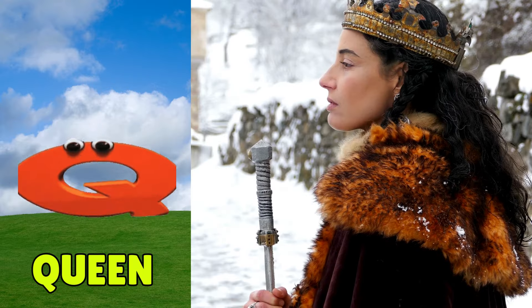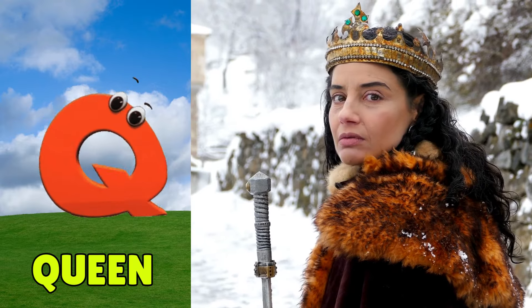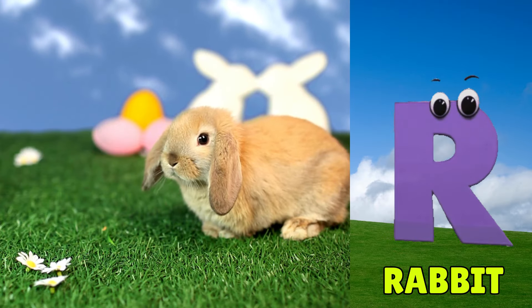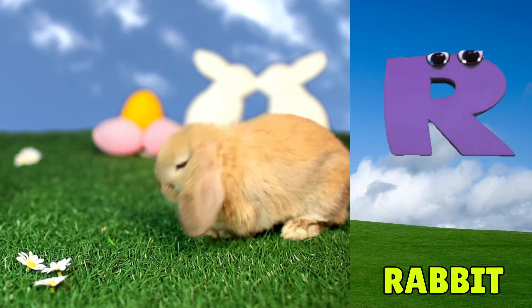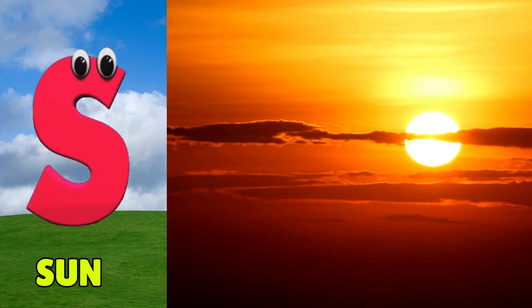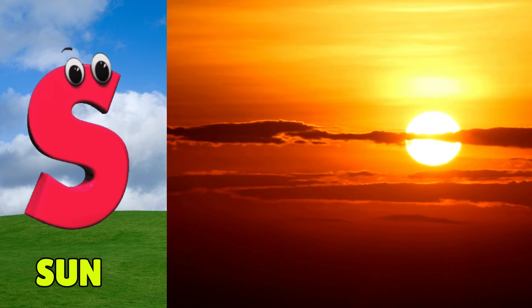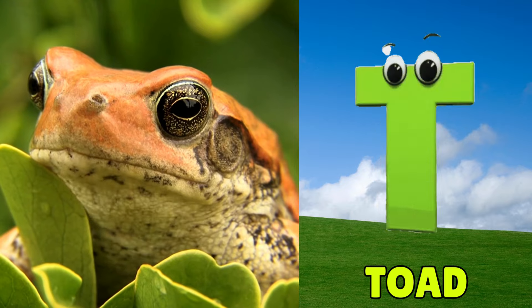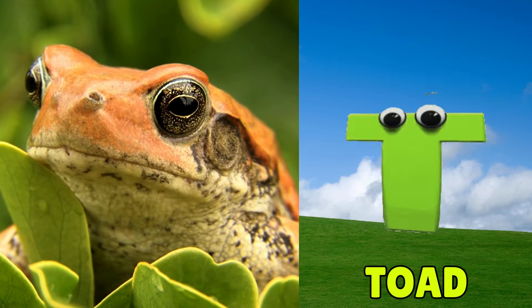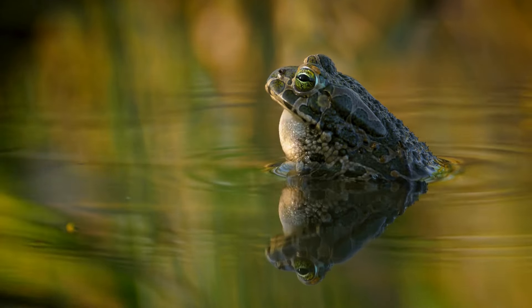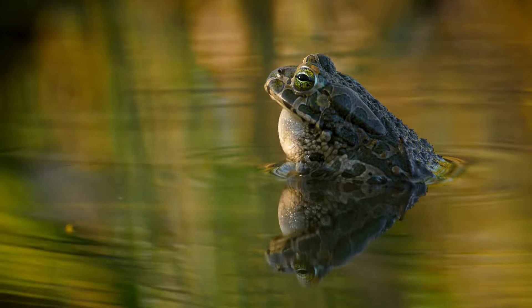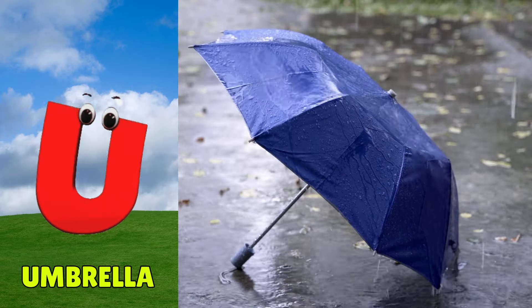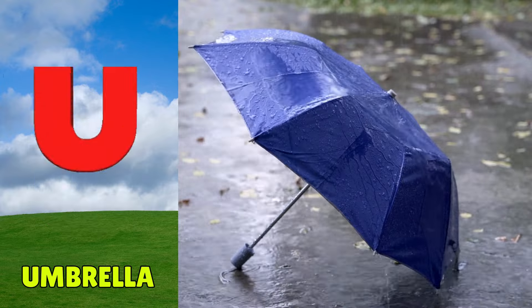Q is for queen, q-q-queen. R is for rabbit, r-r-rabbit. S is for sun, s-s-sun. T is for toad, t-t-toad. U is for umbrella, u-u-umbrella.